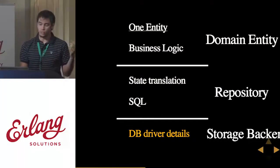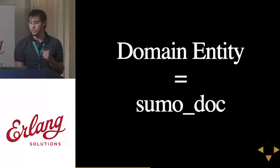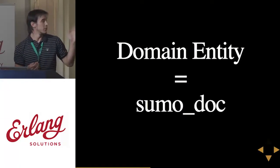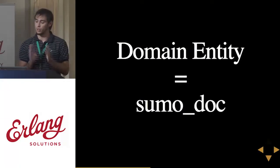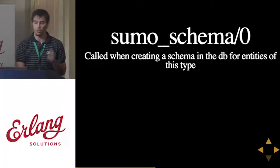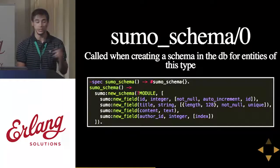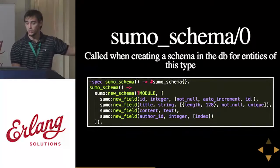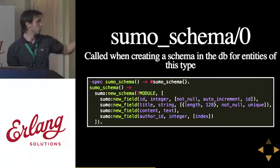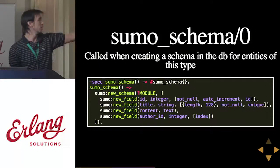In Sumo, these three concepts are implemented with behaviors. The domain entities in SumoDB are just modules that implement the SumoDoc behavior. This behavior only needs three callbacks: SumoSchema, SumoSleep, and SumoWakeUp. SumoSchema is used to create the entity schema in the database. In it, we construct the schema that Sumo needs to create in the DB. To help with that, Sumo provides two convenient functions: new_schema and new_field.